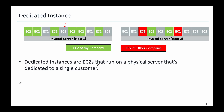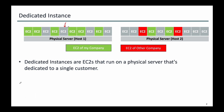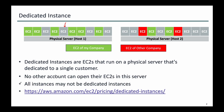Dedicated EC2 instances are EC2s that run on a physical server that is dedicated to a single customer. So you can see that this particular physical host is now dedicated to my company or my account. Because one dedicated instance is already present in it, the other available EC2 slots will not be given to any other company — that is how it works. Whereas for physical host 2, there is no restriction like that; the available slots may be used by any other company. No other account can open their EC2s in this particular server. And all instances may not be dedicated instances — just keep that in mind.